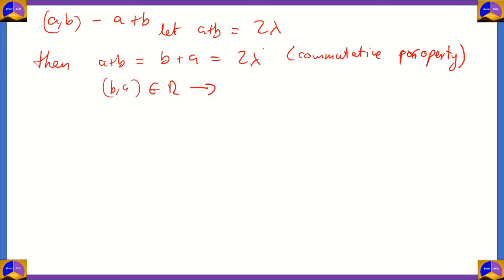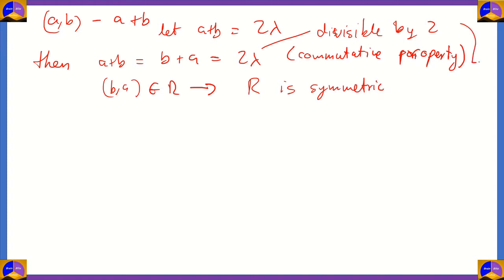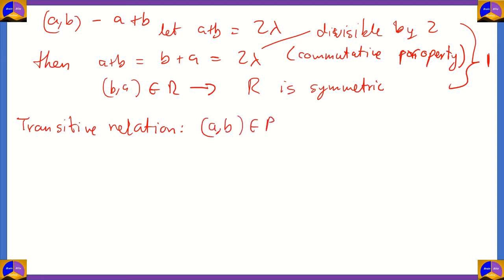Since 2λ is divisible by 2, (b, a) belongs to R as well, meaning R is symmetric. You will get one mark for proving symmetry as the steps are a bit longer. Now to prove that the relation R is transitive: you need to prove that if (a, b) belongs to R and (b, c) belongs to R, then (a, c) also belongs to R.